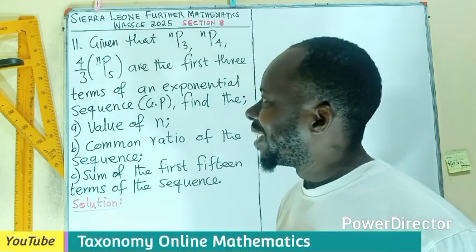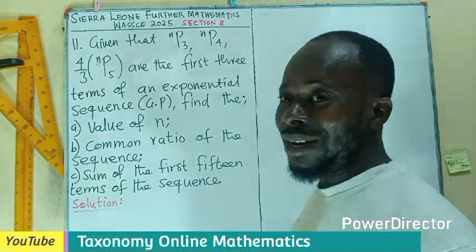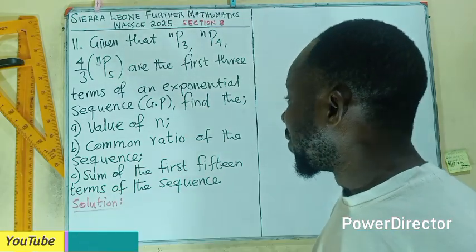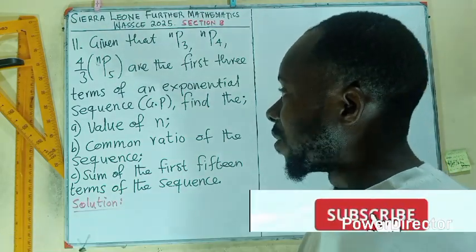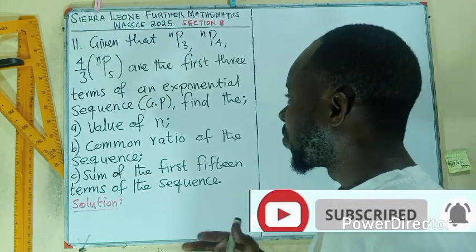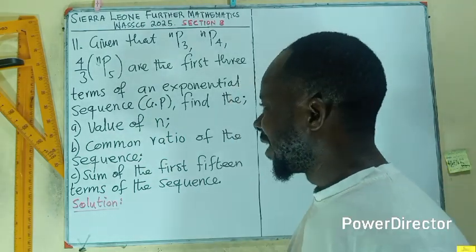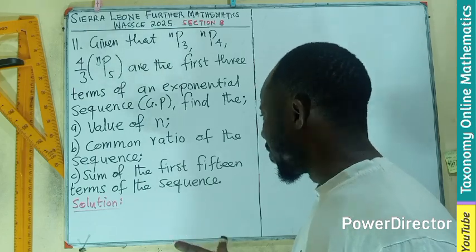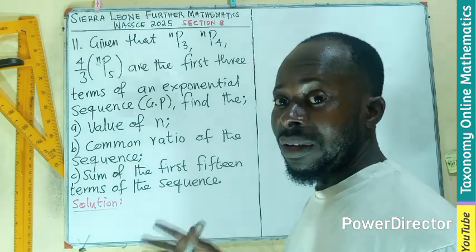Welcome to question 11. Given that n permutation 3, n permutation 4, and 4 on 3 n permutation 5 are the first three terms of an exponential sequence, we have to find the value of n, the common ratio, and the sum of the first 15 terms of the sequence.